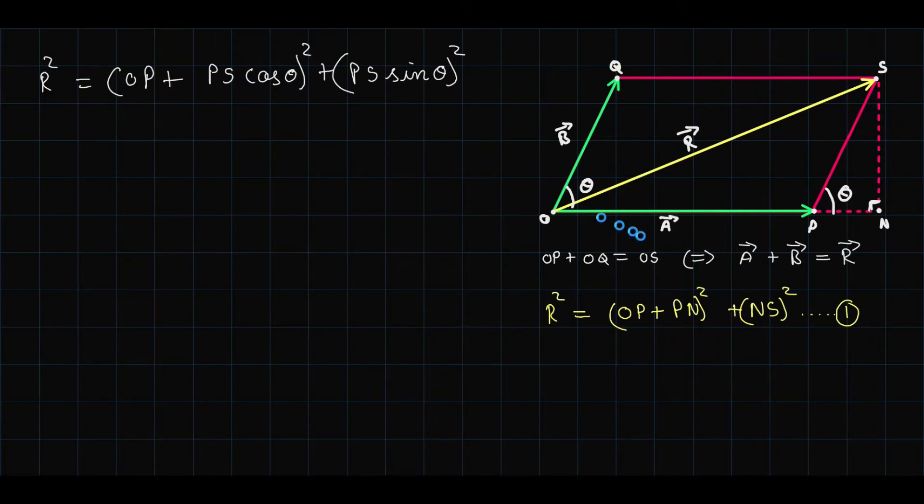From here the value of OP is vector A and the value of PS is vector B. Why? Because they are parallel and of same magnitude to each other. So this is also vector B. Now we substitute A and B in this equation.